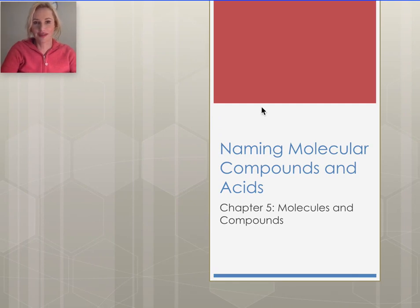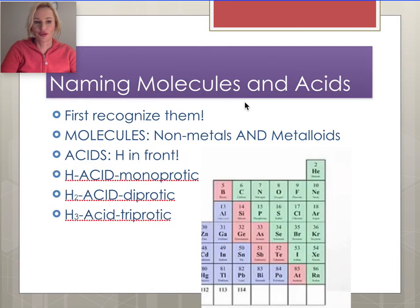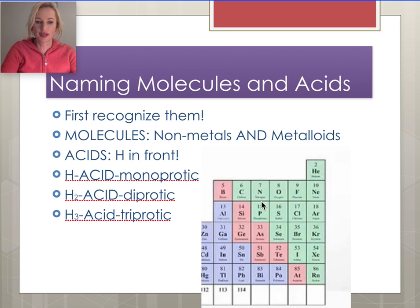In this last section of naming nomenclature, we are going to focus on molecular or covalent compounds — same thing. The first thing you have to be able to do in order to name them is recognize them. Molecules, also called binary molecular compounds or covalent compounds, are made up of metalloids — shown here in red — and/or nonmetals, shown here in green.